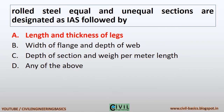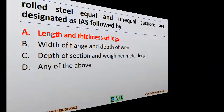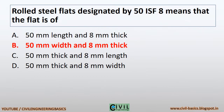Rolled steel equal and unequal sections are designated as ISA, followed by length and thickness of legs. Rolled steel flats designated by 50ISF8 means that the flat is of 50mm width and 8mm thick.